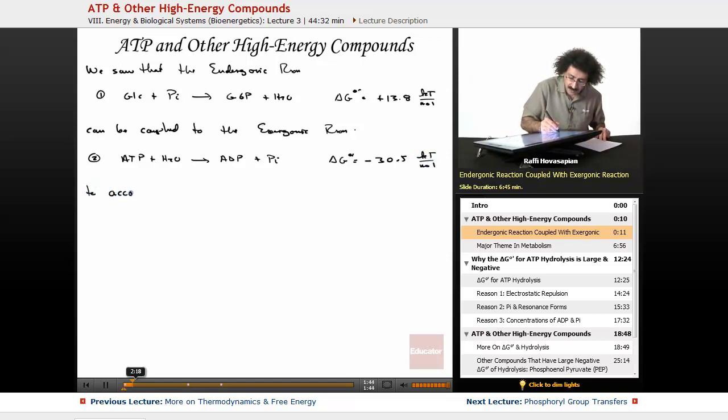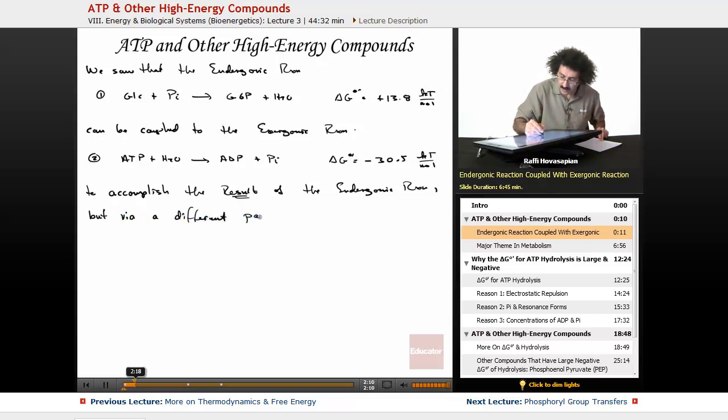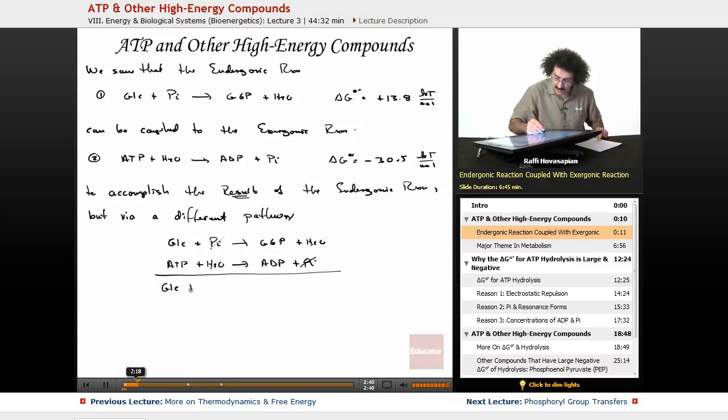So we saw glucose plus PI goes to G6P plus H2O. And over here we had the ATP, we had the H2O, and then of course we had the ADP and the PI. Similar species cancel, and what you get is a net reaction. We have glucose plus ATP going to G6P plus ADP.